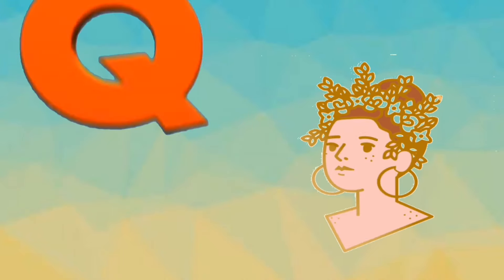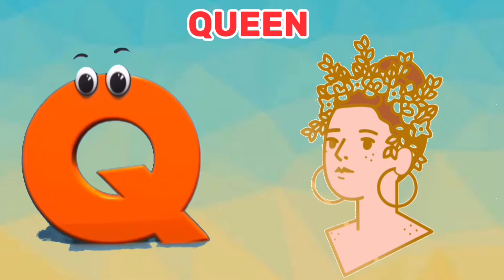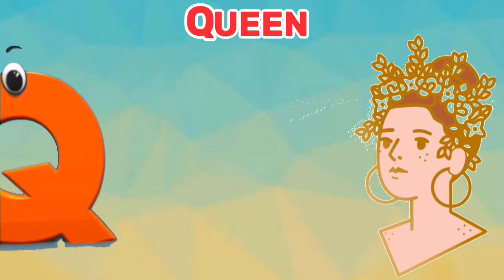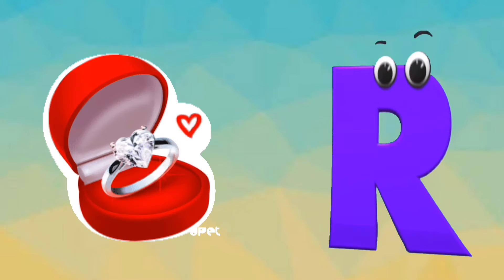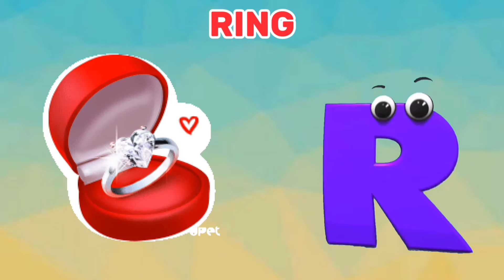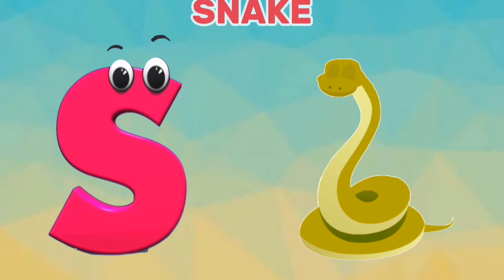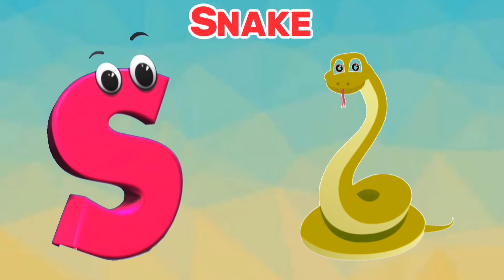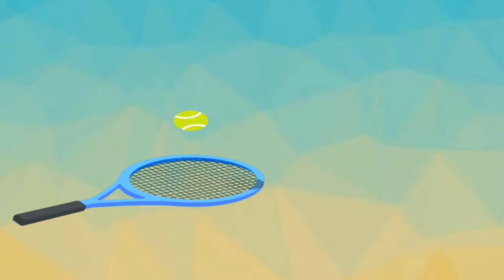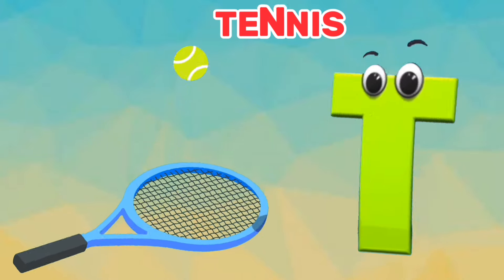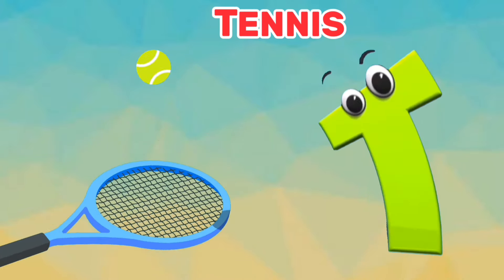Q is for queen. Q, qu, queen. R is for ring. R, r, ring. S is for snake. S, s, snake. T is for tennis. T, t, tennis.